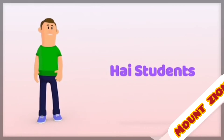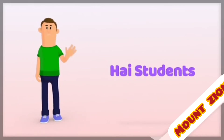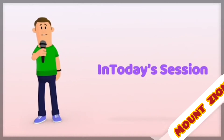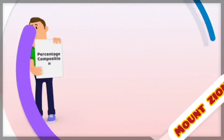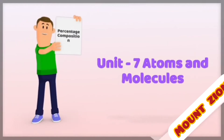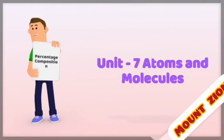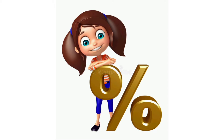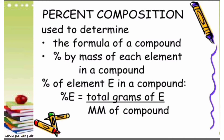Hi students, I hope you all are fine. In today's session I'm going to discuss about unit 7 atoms and molecules — percentage composition. The girl in the picture represents composition, which is used to determine the formula of a compound as well as the percentage by mass of each element in a compound. We have one formula to find out the percentage of an element in a particular compound.